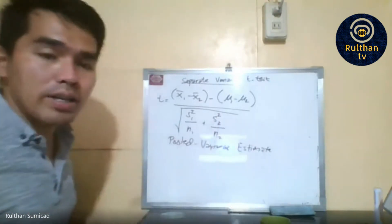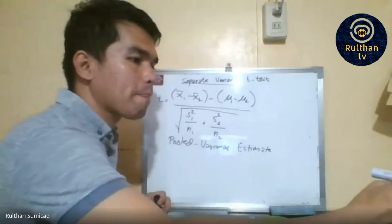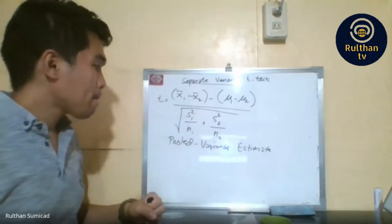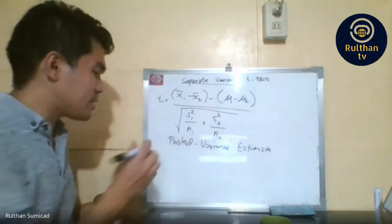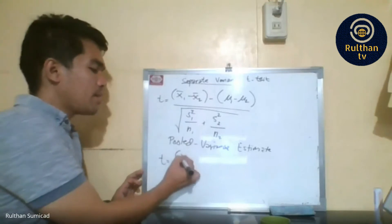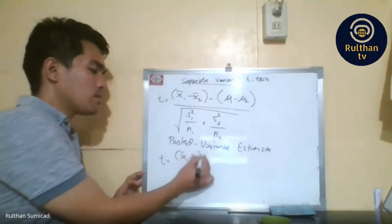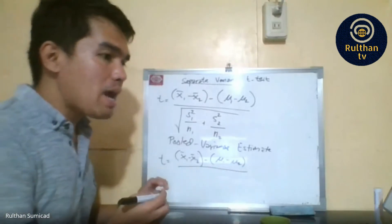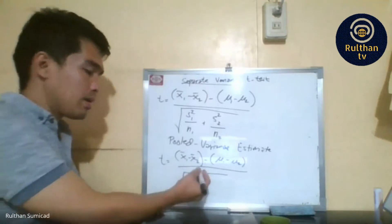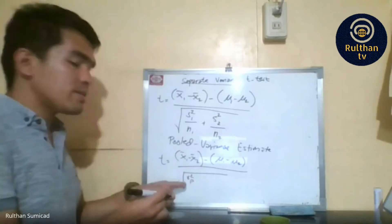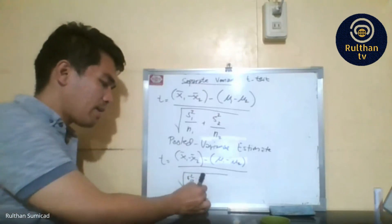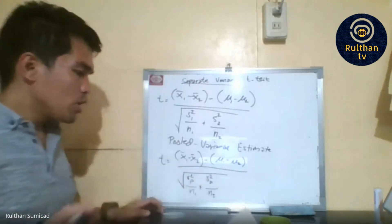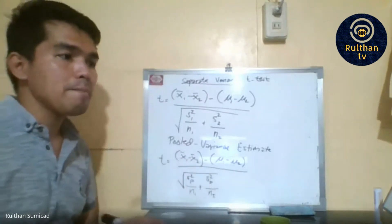The concept here is to estimate the standard error for two sample groups combined. The formula for the pooled variance T-test is: T equals (mean one minus mean two) minus (mu one minus mu two), divided by the square root of S-squared-P over N1 plus S-squared-P over N2, where S-squared-P is the pooled variance.